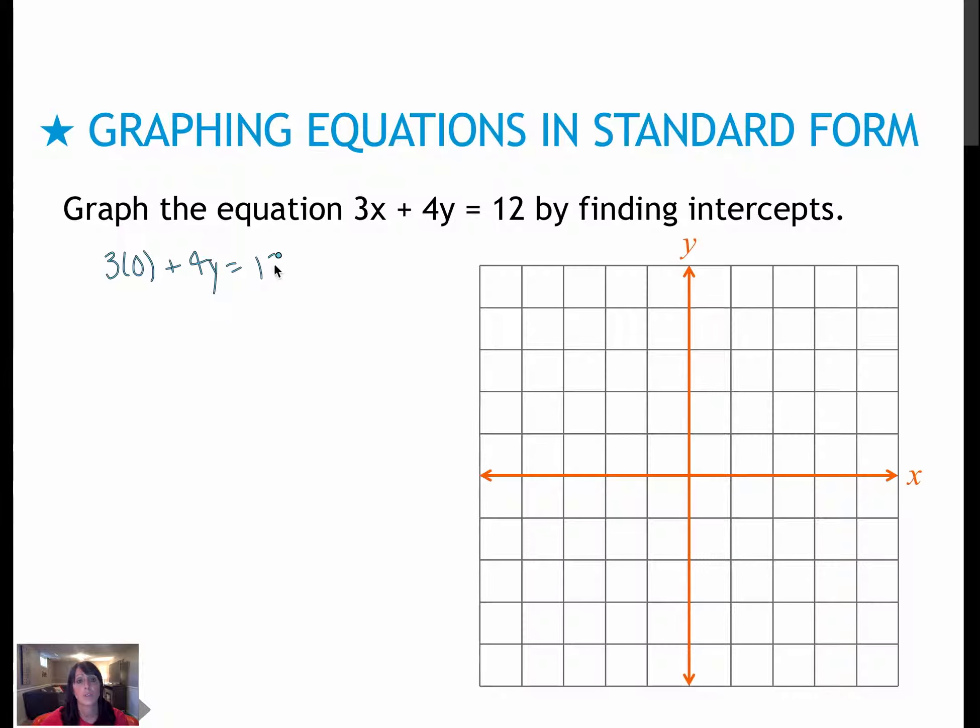For the first, if I let x equal 0, that's 3(0) + 4y = 12. 3 times 0 is 0. Dividing by 4 gives me y = 3, so (0, 3).